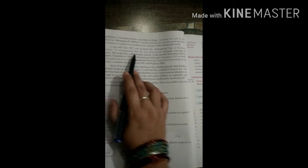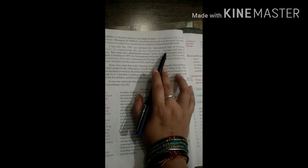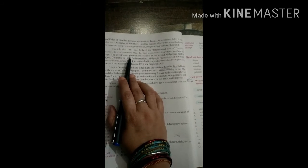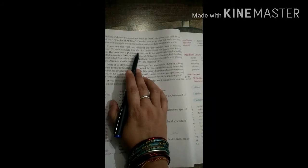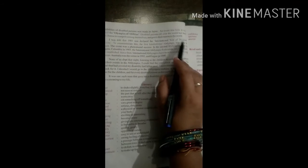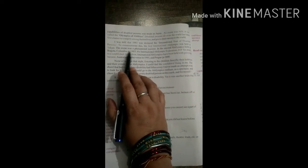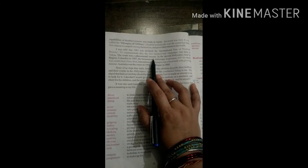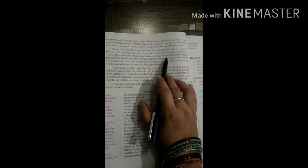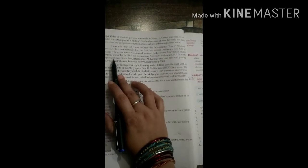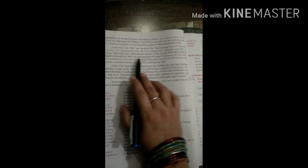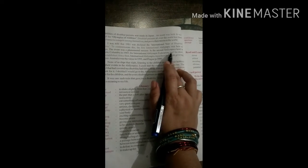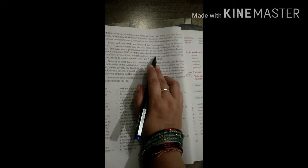I was told that 1981 was declared the International Year of Disabled Persons. To commemorate this, the first International Abilimpics was held in Tokyo, and that was a phenomenal success.